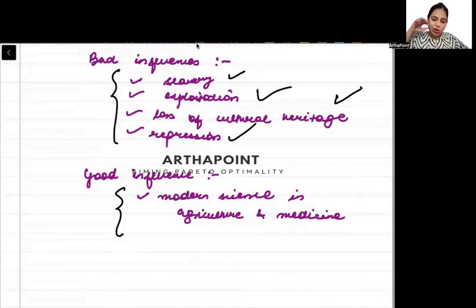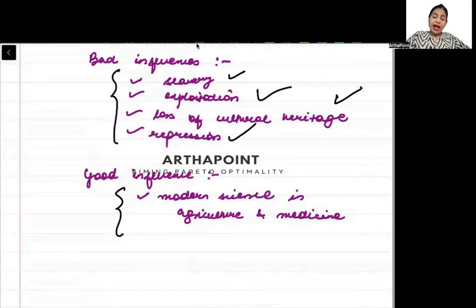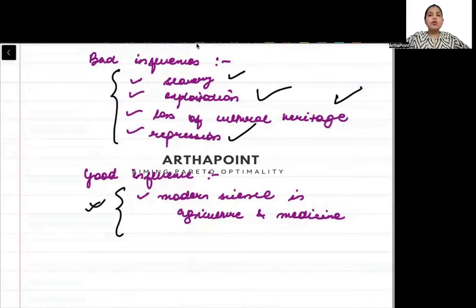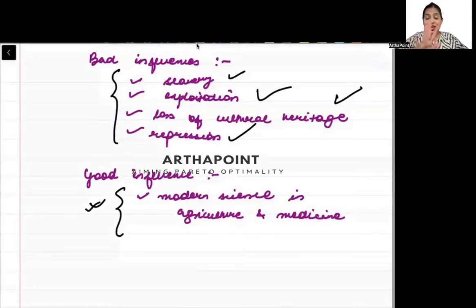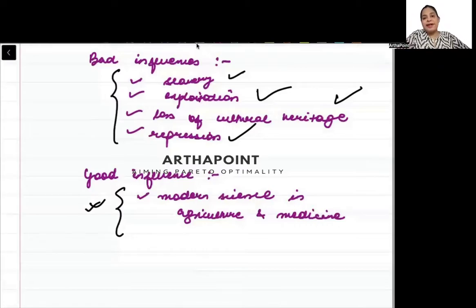Their technological background was very strong. When they captured another country, they brought their good technological facilities with them — so that was a good influence. And when the colonies went back — like when the Britishers left India — we still had some of the good things they brought with us. It was because the Britishers were there that somehow we had the starting of the Tatas, entrepreneurship. During that period the steel industry came up, the railways came up. Although the Britishers had built the railways for their own use, we still had the coming up of railways during that period.